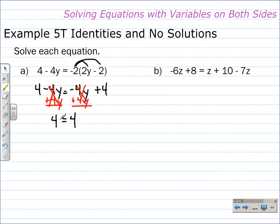Now, what that means is that 4 is always equal to 4. Therefore, this equation has all real numbers as a solution, or as we like to call it, the identity.